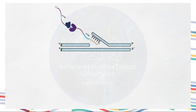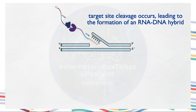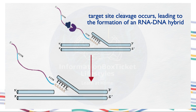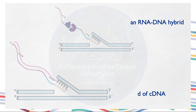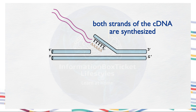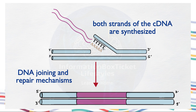During integration, a target site cleavage occurs, leading to the formation of an RNA-DNA hybrid. In this situation, the reverse transcription reaction takes place, resulting in the synthesis of the first strand of cDNA. Ultimately, both strands of the cDNA are synthesized, followed by DNA joining and repair mechanisms that incorporate these elements into the genome. This outlines how LINEs, or non-retroviral retrotransposons, become integrated into the genome. Despite structural differences, there is a similarity in their integration process, as both utilize an RNA intermediate.